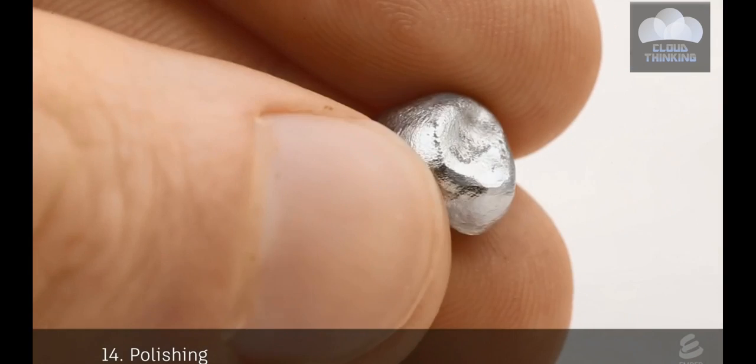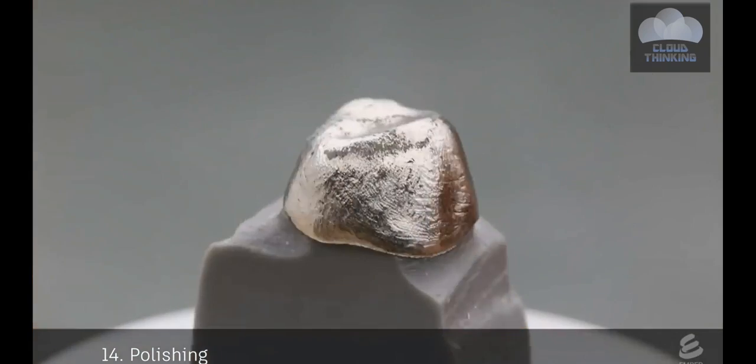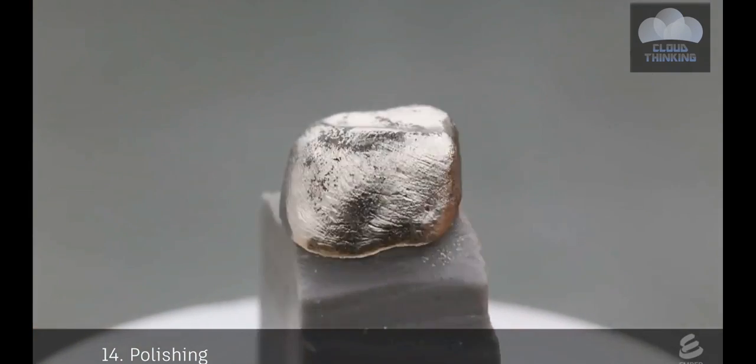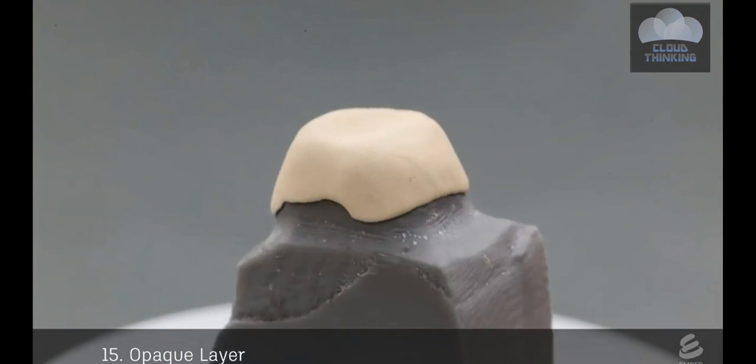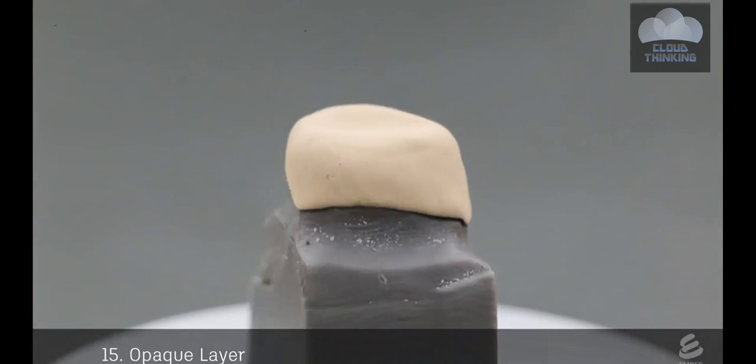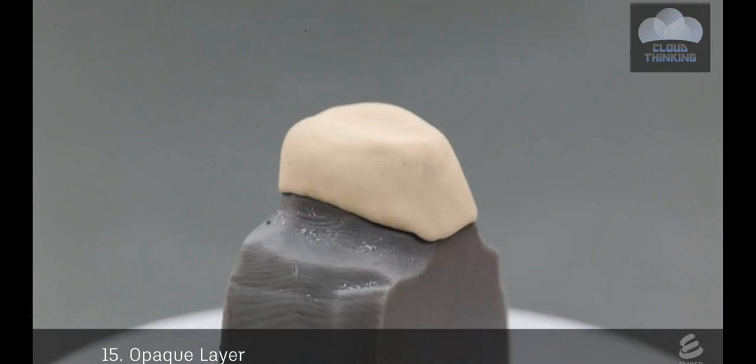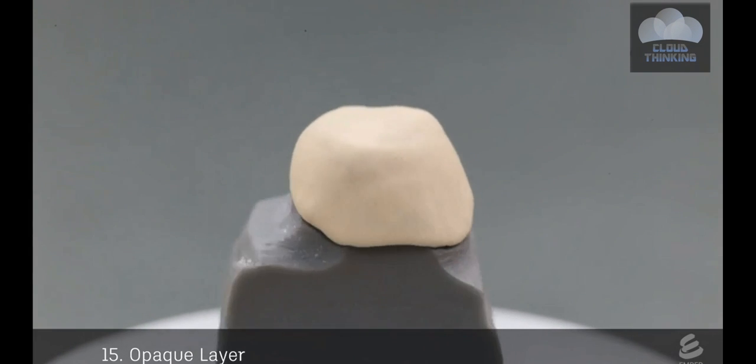These castings then go through a polishing step. This metal casting will form the substructure of the final crown. Next, an opaque layer is applied to the casting. It acts like a primer. It covers up the gray color of the metal and also increases adhesion with the porcelain layer.